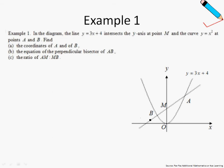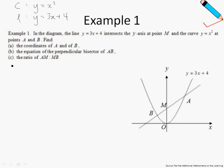In example number one, we have a curve and a line, and we are asked to find the points of intersection. When a curve and a line intersect, we can equate their equations together, or basically just solve them simultaneously. The equation of the curve is y equals x squared, and the equation of the line is y equals 3x plus 4. To solve these two equations simultaneously, let me substitute equation number one into equation number two.